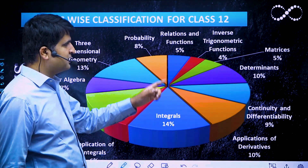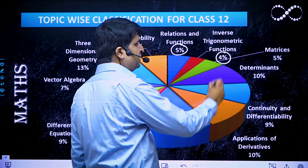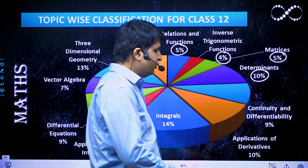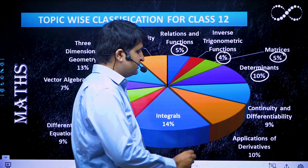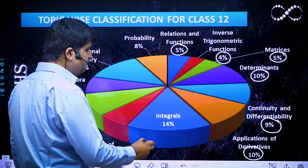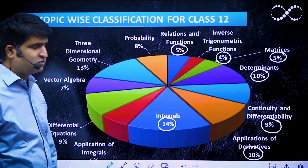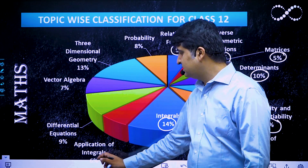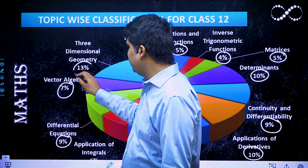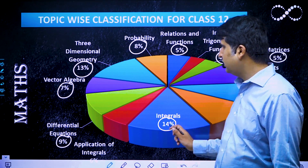The topic-wise classification for Class 12: Relations and Functions comprises 5%, Inverse Trigonometric Functions 4%, Matrices 5%, Determinants 10%, Continuity and Differentiability 9%, Applications of Derivatives 10%, Integrals — covering both definite and indefinite integration — is the most important topic at 14%, Application of Integrals 6%, Differential Equations 9%, Vector Algebra 7%, 3D Geometry 13%, and Probability 8%.